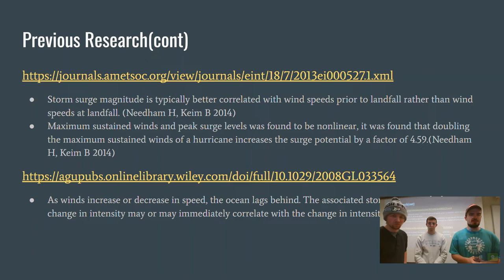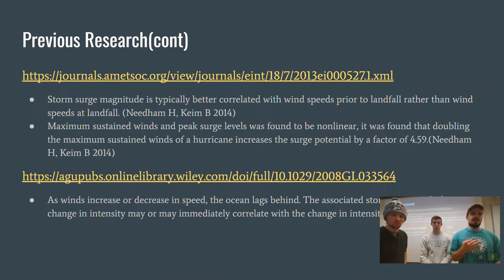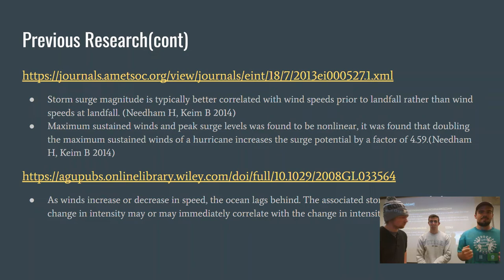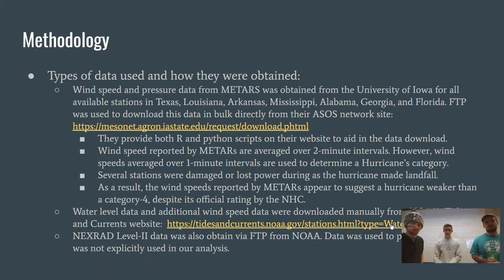We found two papers which discuss these topics in good detail. In the first paper, they found that storm surge magnitude is typically better correlated with wind speeds prior to landfall rather than at landfall. They also found that maximum sustained winds and peak surge levels were not always linear — doubling the maximum sustained winds increases surge potential by a factor of 4.59. In the second paper, they found that as winds increase or decrease in speed, the ocean lags behind, meaning there may not always be a direct relation immediately between intensity changes and storm surge response.